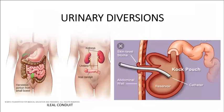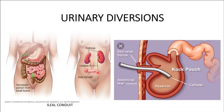Another urinary diversion is the ileal conduit — the most common type. A portion of the terminal ileum is used as a conduit; ureters are reimplanted into the ileal segment and the distal end is brought through the skin to form a stoma. Monitor for obstruction. Postoperatively, mucus threads from the stoma are expected and normal.